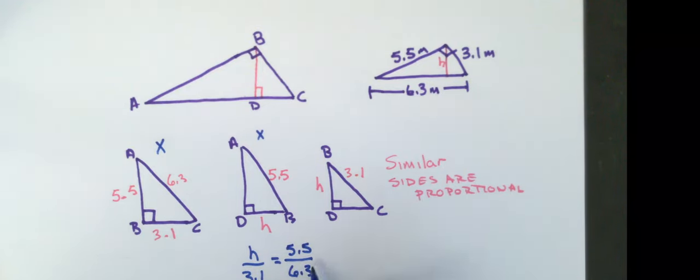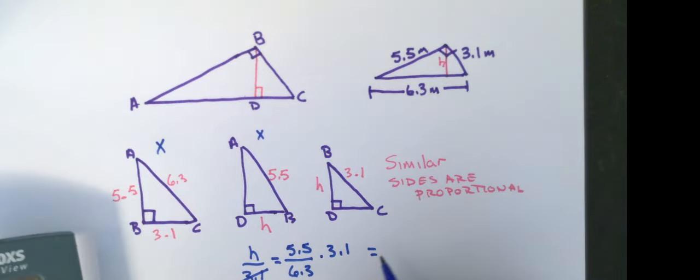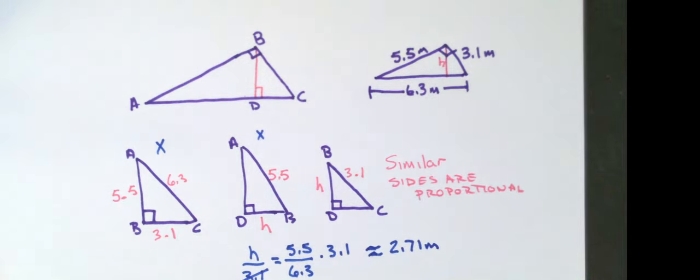So, I'm going to multiply both sides by 3.1 and use my calculator. Get 5.5 times 3.1 divided by 6.3. And I get approximately 2.71 meters.